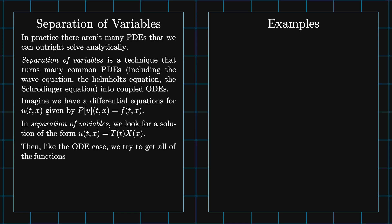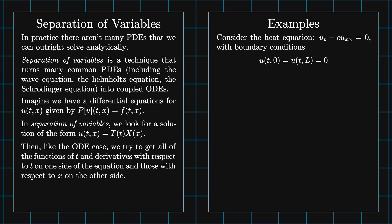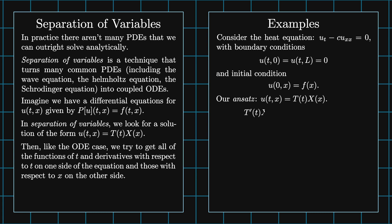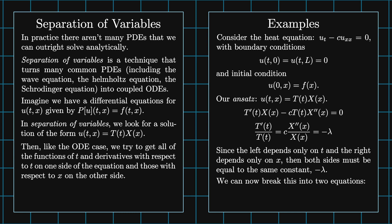Then, like in the ODE case, we try to get all of the functions of t and the derivatives with respect to t on one side of the equation and all of those with respect to x on the other side. Let's consider the heat equation: U t minus c U xx equals 0, with boundary conditions u of t and 0 equals u of t and L equals 0, and initial condition u of 0 and x equals f of x. Our ansatz is that u of t and x equals T of t times X of x. When we plug this into the heat equation, we get T prime X minus c T X double prime equals 0. We can isolate the terms depending on t on the left and the terms depending on x to the right: T prime divided by T equals c times X double prime divided by X. Since the left depends only on t and the right depends only on x, then both sides must be equal to the same constant minus lambda. We can now break this into two equations: T prime equals minus lambda T and X double prime equals minus c lambda X.